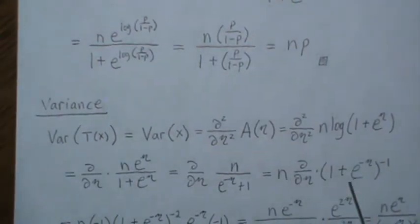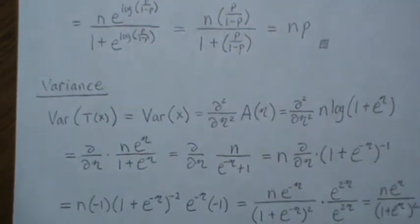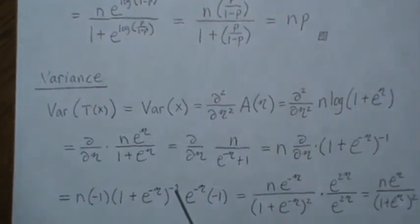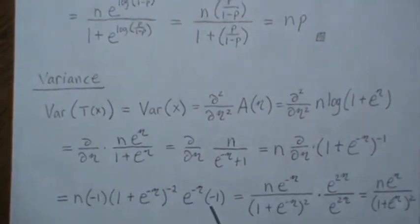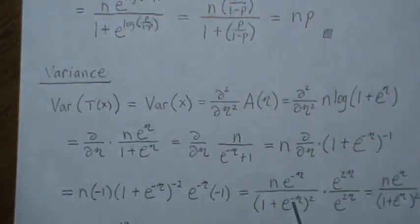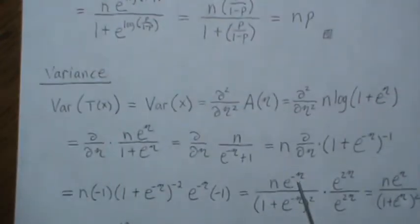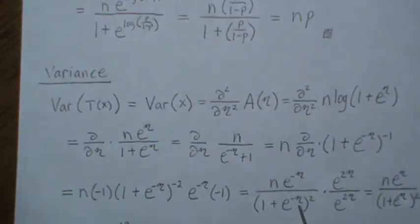And then we take the derivative of that. The minus 1 comes out front and then it's raised to the minus 2 times the derivative of the inside, and we get this. Now combine all that and you get this. And then I like to change that positive with the negative back to a positive, so it's e^(2η) over e^(2η), and then that goes in and becomes this.